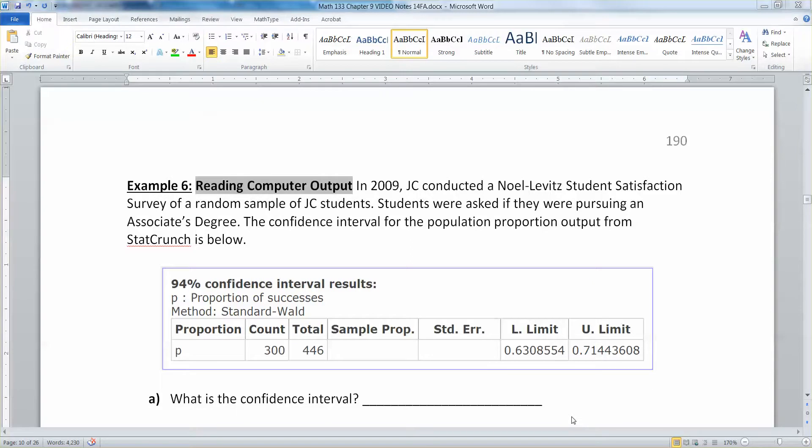The last question in section 9.1 is a really great question because you don't have to calculate the confidence interval. You have to use computer program output of that confidence interval to answer a bunch of questions. This is very much the kind of thing that I love to put on exams.